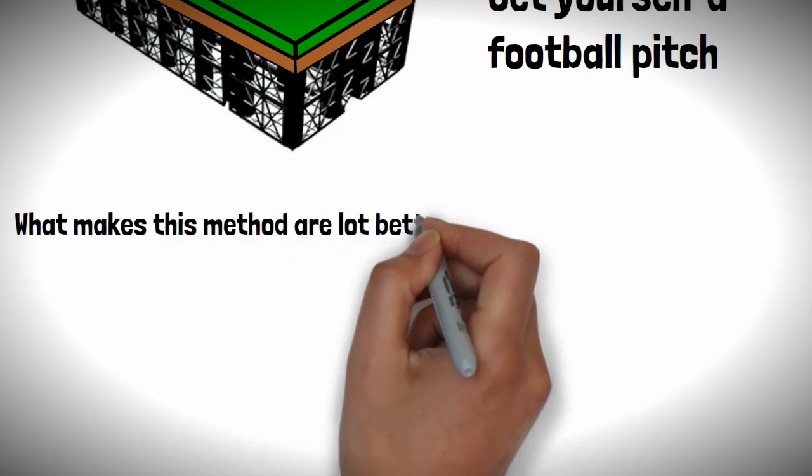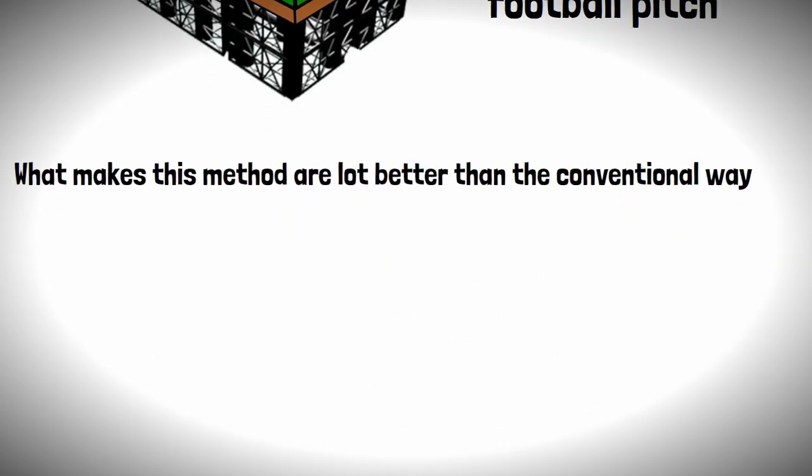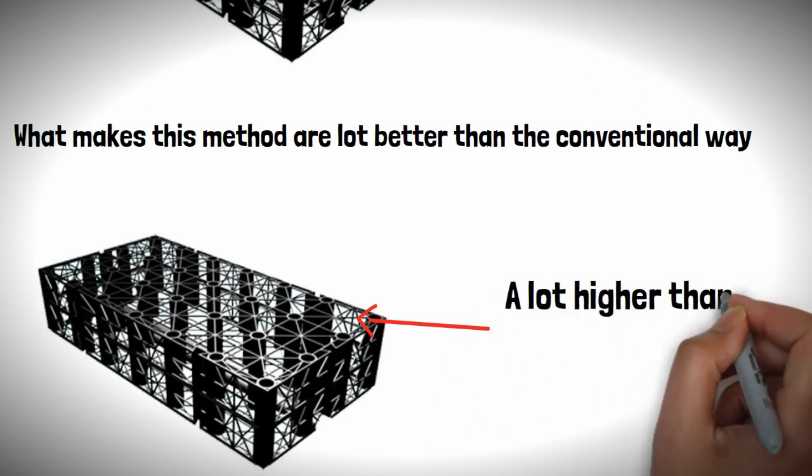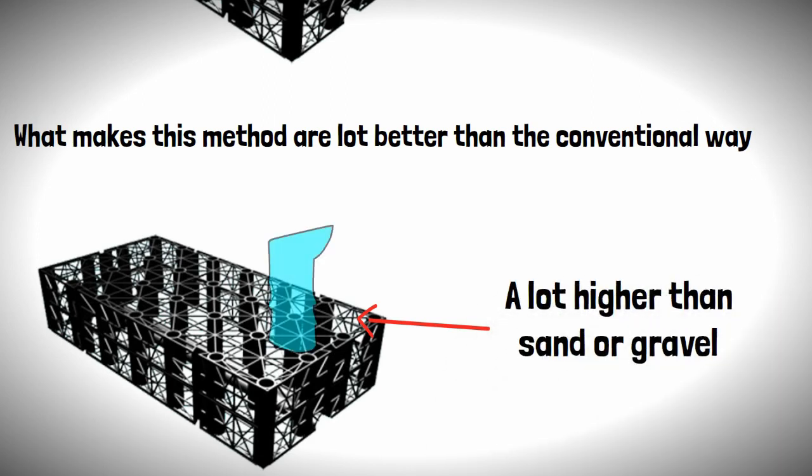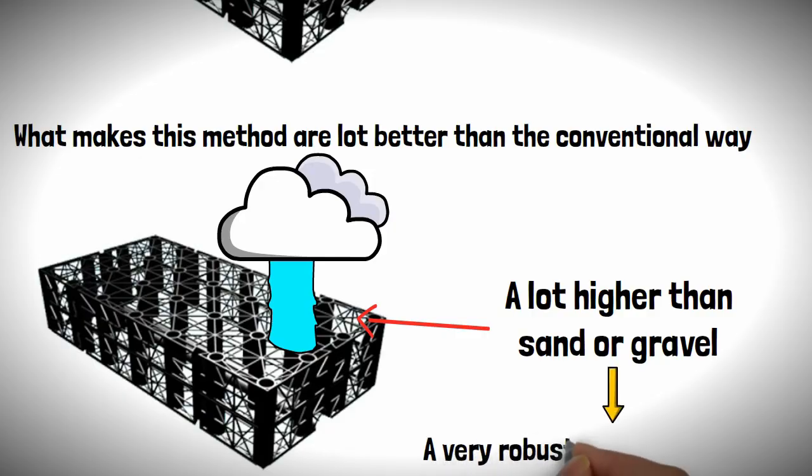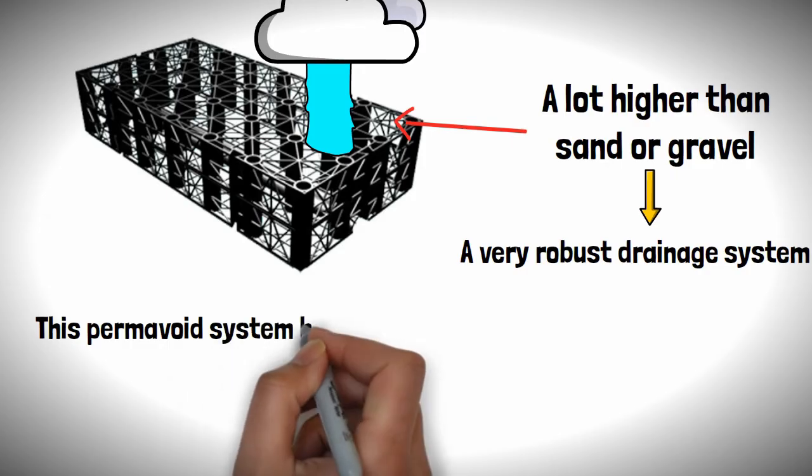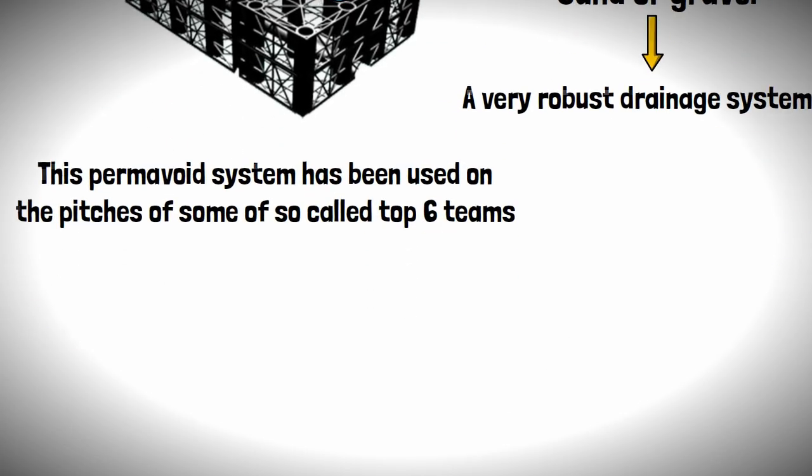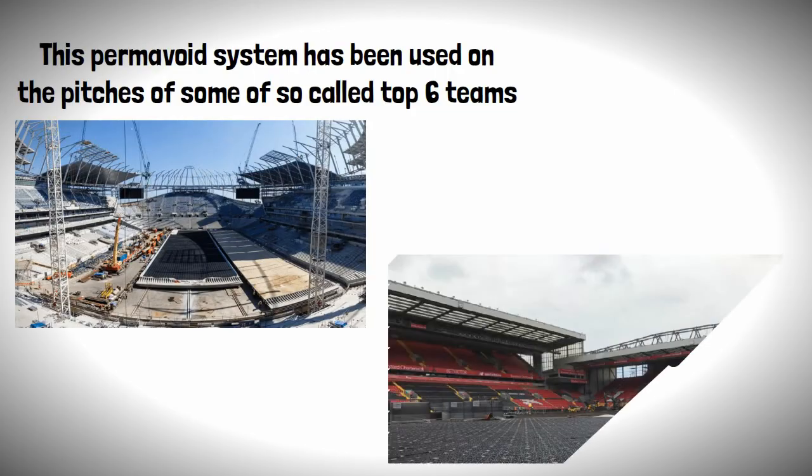What makes this method a lot better than the conventional way of draining the football pitch is the space in between the crates is a heck of a lot higher than sand or gravel. Meaning water can just gush through, making a very robust drainage system. This permavoid system has been used on pitches of some of the so-called top six teams, such as the New Tottenham Stadium and Anfield.